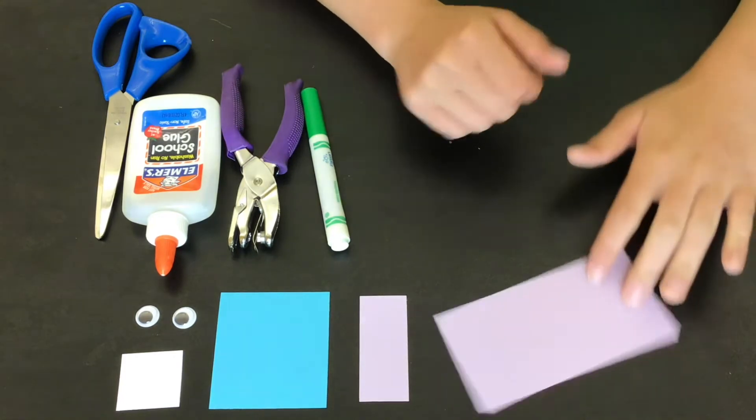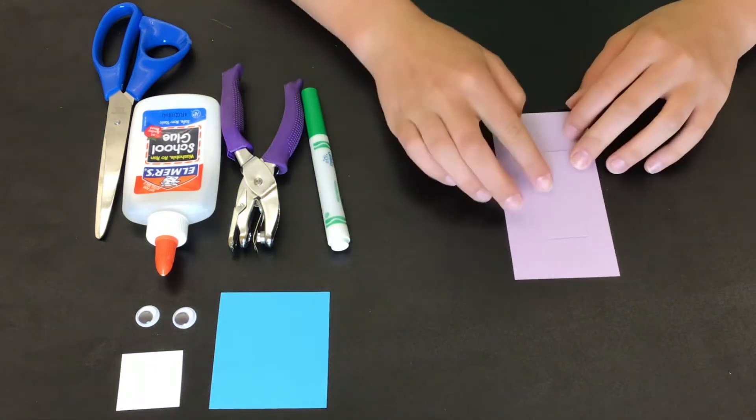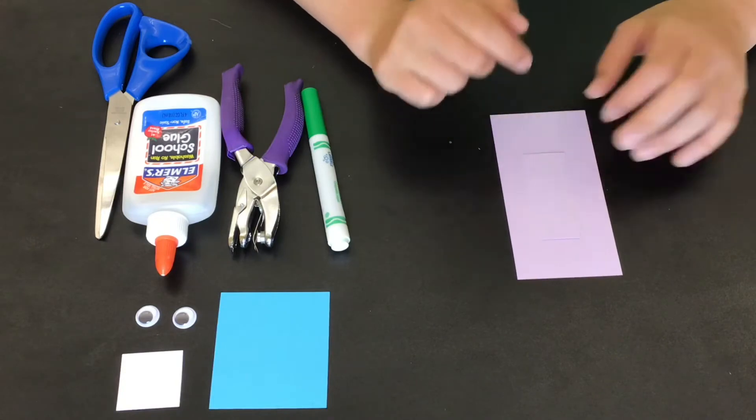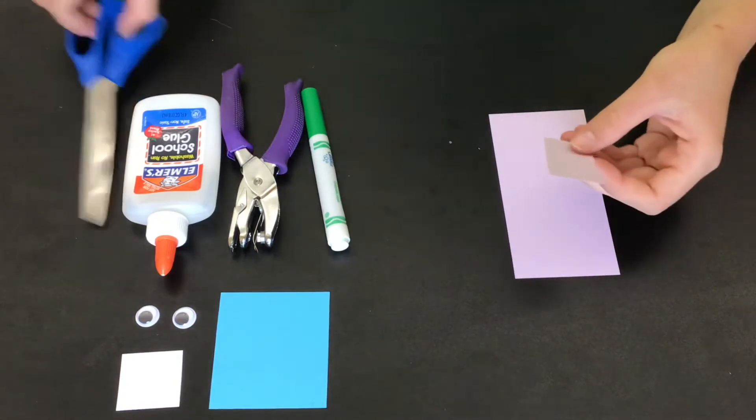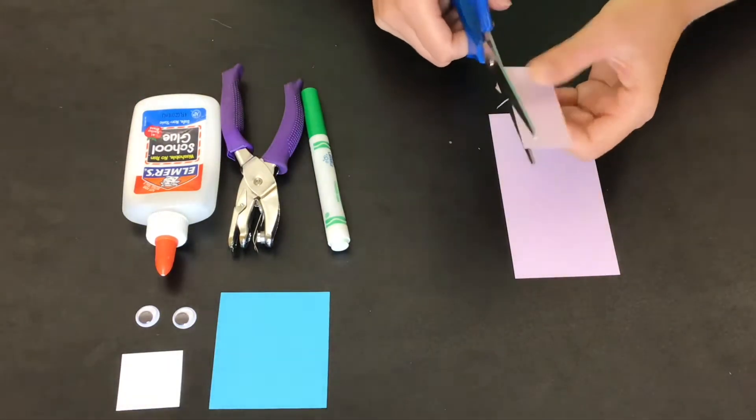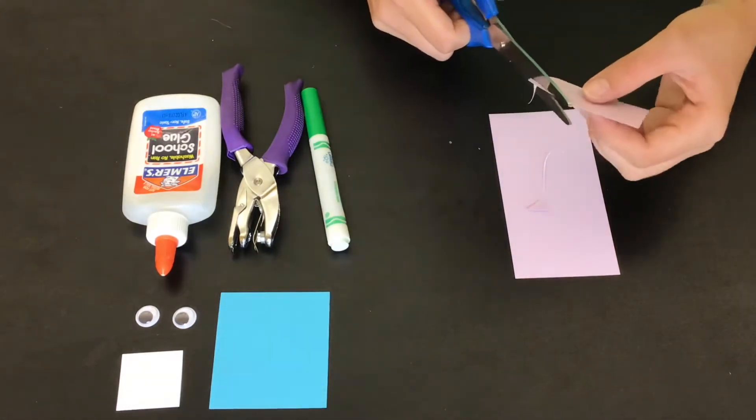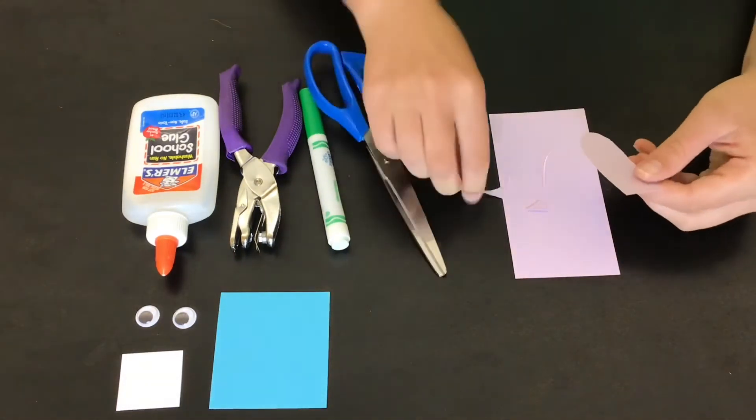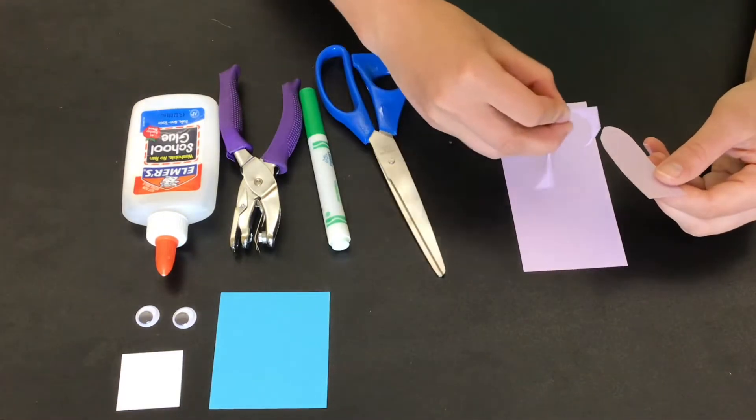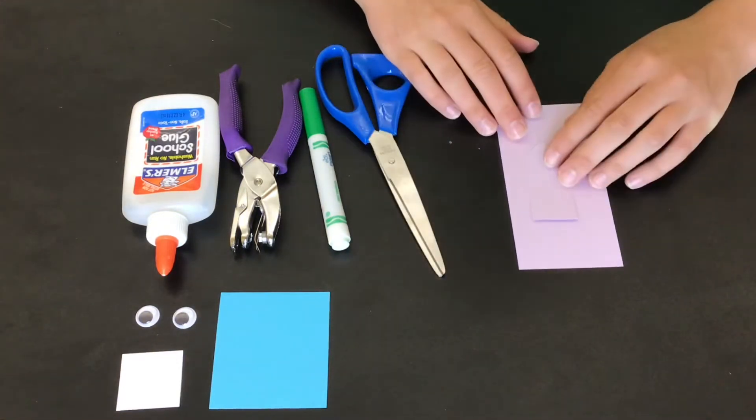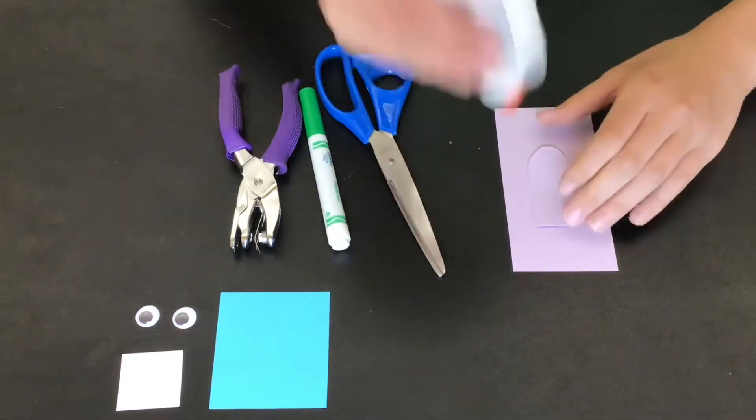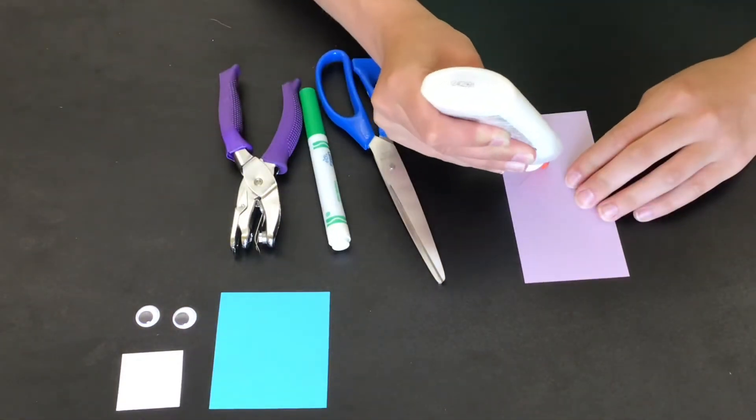To start, you're going to take your two pieces of paper that are the same color. This is going to be your monster body and your monster nose. You can take your nose and cut it into whatever shape you want. I'm cutting mine into a nice rounded nose, but you could make yours pointy or really short. It doesn't matter what shape your nose is, but you want to make it long enough that it'll hook over a piece of paper, which would be your book page.